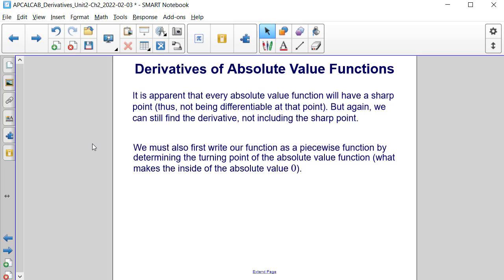We must also first write our function as a piecewise function by determining that turning point of the absolute value function. In other words, what makes the inside of the absolute value be 0?